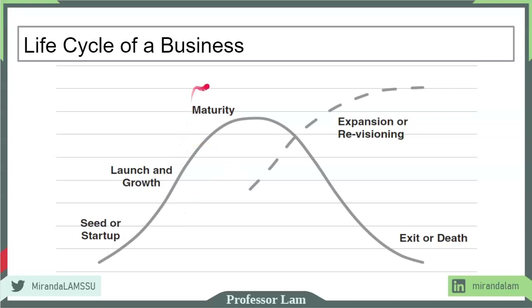If they're successful, eventually they may reach a point of maturity. A business can then do one of two things: they can continue to expand, or they may need to re-envision and enter a second stage of growth. If they don't do that, sometimes they may decide to exit the marketplace.